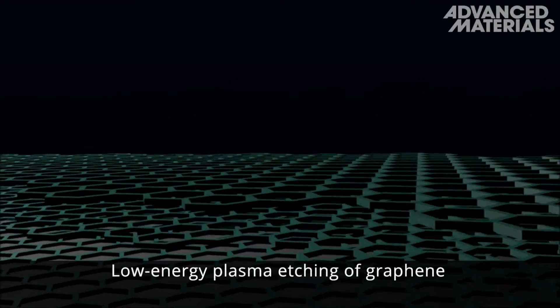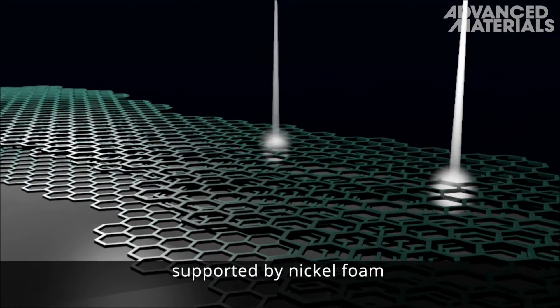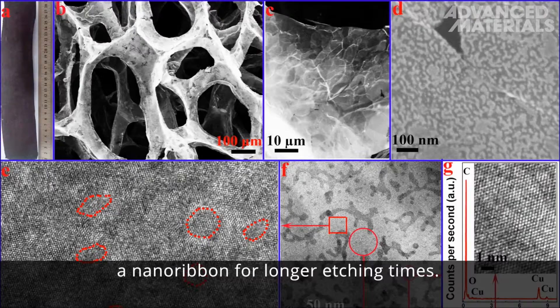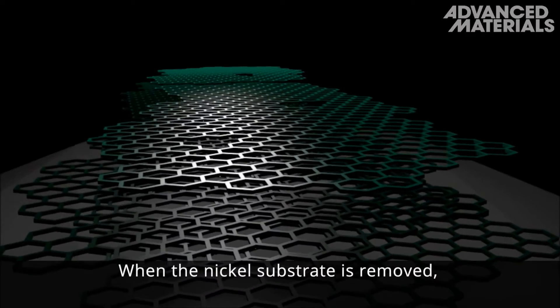Low-energy plasma etching of graphene supported by nickel foam forms nano-sized pores that merge to nano-ribbons for longer etching times. When the nickel substrate is removed, a porous 3D structure remains.